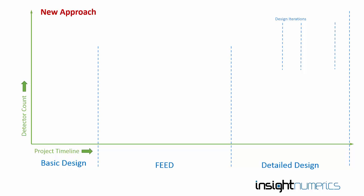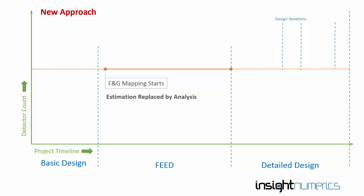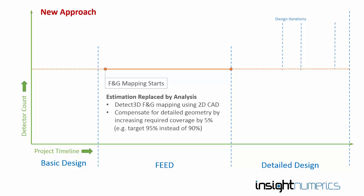Instead of performing the fire and gas mapping at detailed design, more and more of our customers are now using Detect 3D much earlier to arrive at the initial estimate of Detector Count. The reason for this is that you can greatly increase the accuracy of the initial estimation by loading in the 2D CAD into Detect 3D and performing some fire and gas mapping as soon as the 2D CAD is available. To account for objects that may not yet be in the CAD file, such as pipe work, we recommend increasing the coverage target from, say, 90% 1-out-of-N to 95% 1-out-of-N, in anticipation of the obstructions created by the additional geometry. Even a very coarse fire and gas mapping study will result in a much more accurate initial estimate than any other technique.